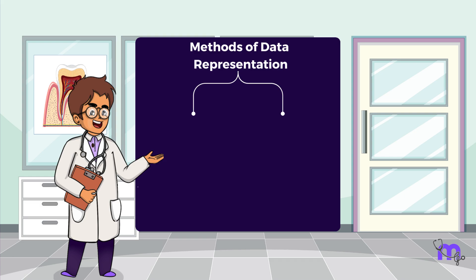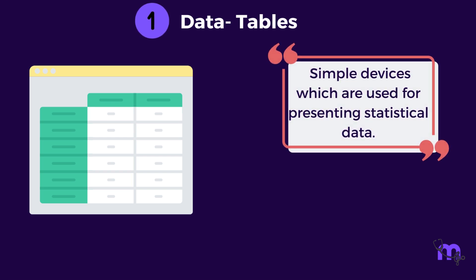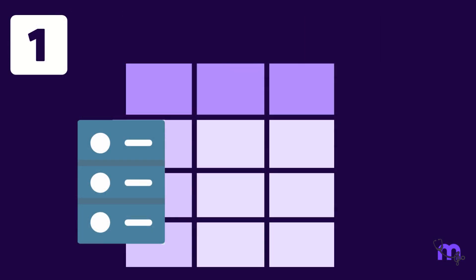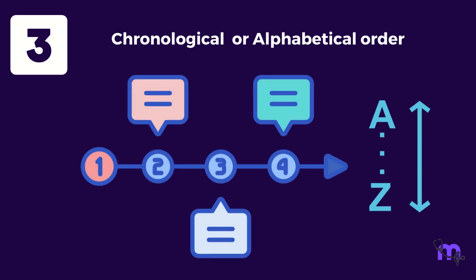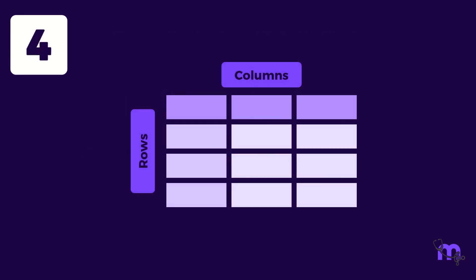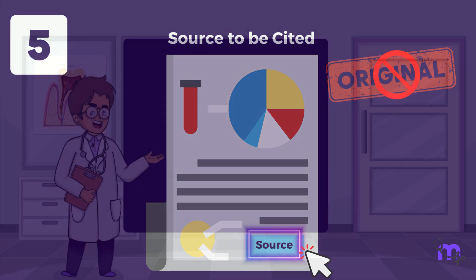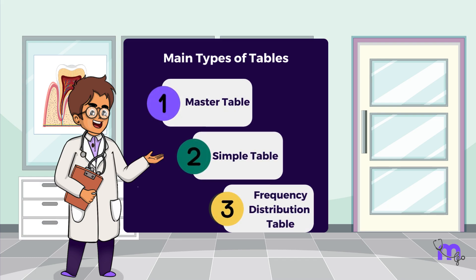There are mainly two methods of presenting data: tables, as well as charts and diagrams. Talking about tables first, these are simple devices used for presenting statistical data. There are certain principles that should be followed while constructing a standard table. Tables should be kept as simple as possible and not overcrowded with data. It is preferable to use two or three small tables rather than a single large table. The data should be presented in chronological or alphabetical order and should be self-explanatory. Each row and column should be labeled clearly, specific units of measure provided, and if the data is not original, the source should be cited in a footnote. The three main types of tables are: master table, simple table, and frequency distribution table.